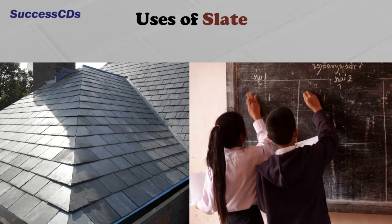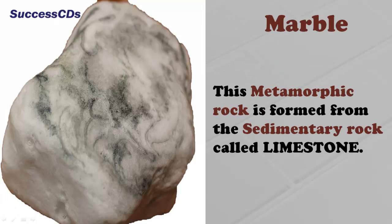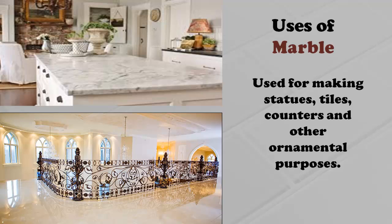Slate can be split into thin sheets and is considered ideal for roofing material and also used for making blackboards. Marble is a metamorphic rock formed from the sedimentary rock limestone. Marble is used for making statues, tiles, counters, and for other ornamental purposes.